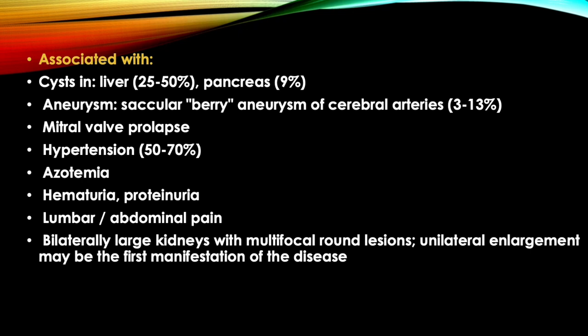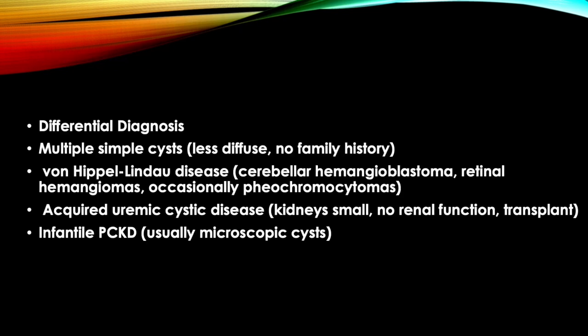Unilateral enlargement may be the first manifestation of the disease. The differential diagnosis includes multiple simple cysts, which are less diffuse and show no family history; Von Hippel-Lindau disease; acquired uremic cystic disease in which kidneys are small, there is no renal function, and they are seen post-transplant; and infantile polycystic kidney disease, which includes microscopic cysts.